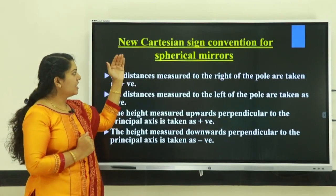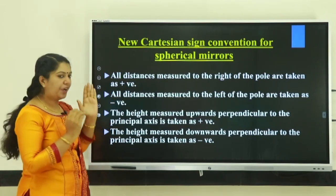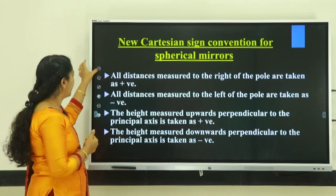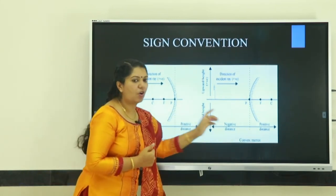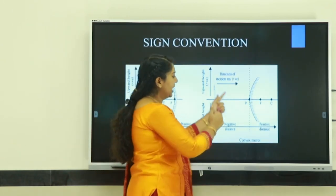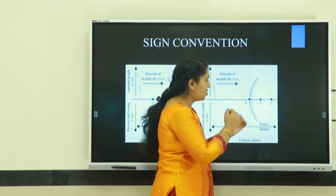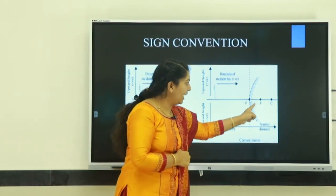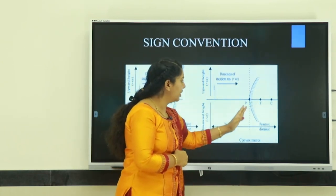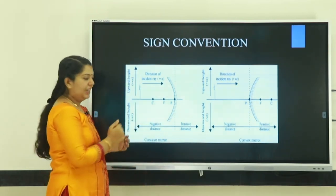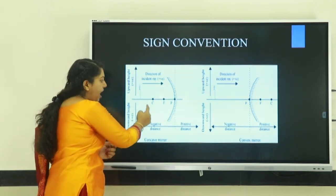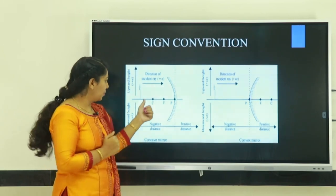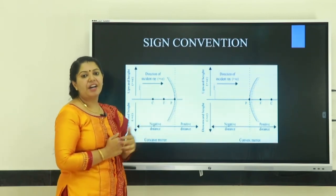Next topic: New Cartesian Sign Convention for Spherical Mirrors. The first rule is: all distances measured to the right of the pole are taken as positive. For a convex mirror, the focus point and center of curvature are to the right of the mirror, so focal length and radius of curvature are positive. For a concave mirror, the center of curvature C, radius of curvature R, and focal length F are all to the left, so C, F, and R are all negative.